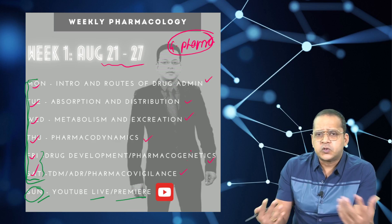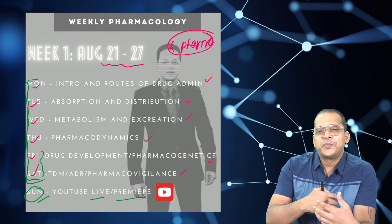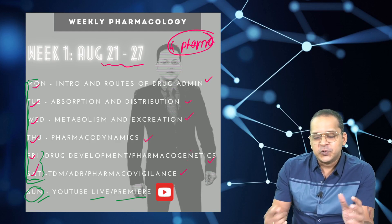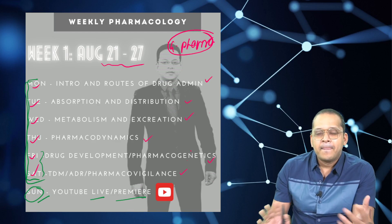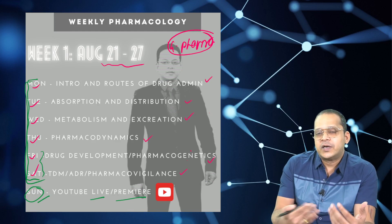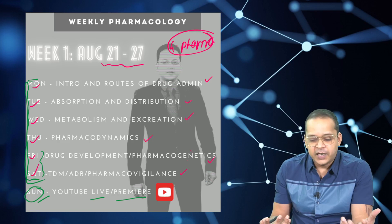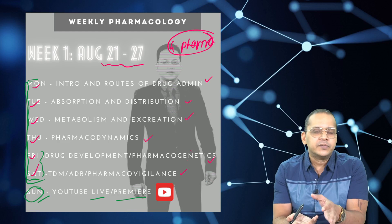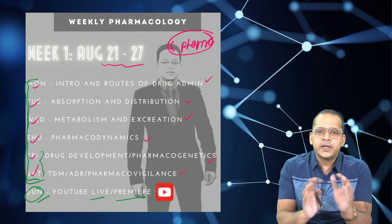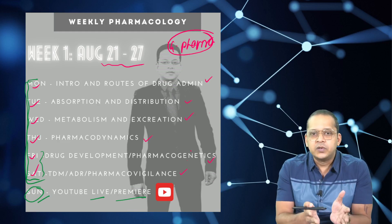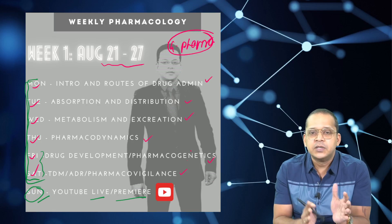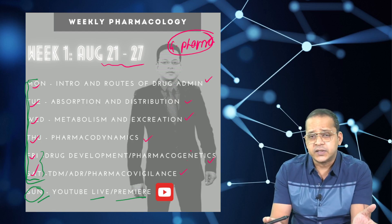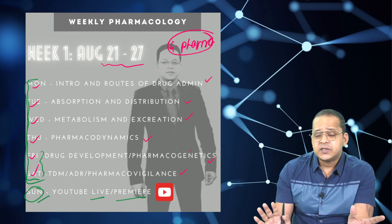Who should NOT do this? If pharma is already your biggest weapon and one of your strongest subjects, you don't need this weekly pharma. But if you're strong in pharma and weak in another subject — microbiology, biochemistry, or medicine — you can tailor-make this timetable in a similar fashion and apply it to whichever subject you're weakest in.